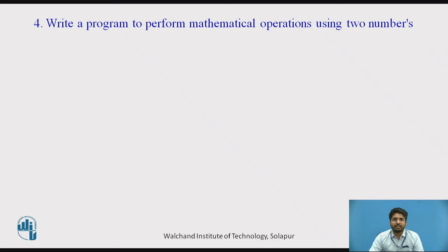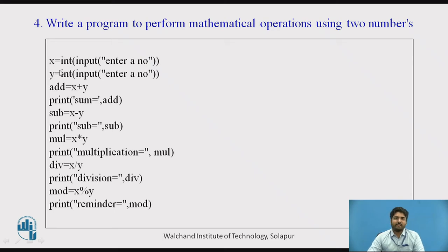Write a program to perform mathematical operations using two numbers. In a previous video we have seen mathematical operators and a simple program. But in this program, we are taking the numbers from the user. Here x and y are integer inputs from the user. We add these two into a variable called add, and print sum. Similarly, subtraction, multiplication, division, and modulus (remainder) are also calculated.